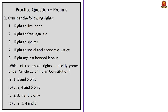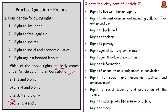Consider the following rights: right to livelihood, right to free legal aid, right to shelter, right to social and economic justice, and right against bonded labour. Which of the above rights implicitly come under Article 21 of the Indian Constitution? The correct answer is option D — all 5 rights given are implicitly guaranteed under Article 21. The Supreme Court in the Maneka Gandhi case and subsequent cases has declared as many as 35 rights as part of Article 21. Some important rights are given for your reference — please take note.